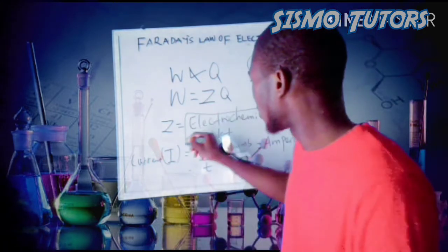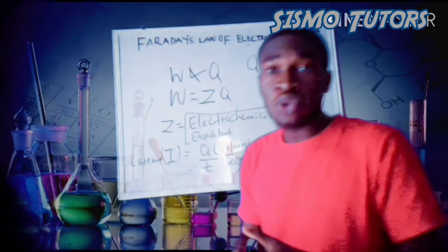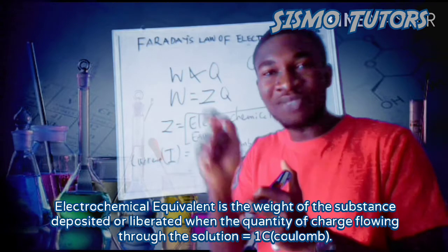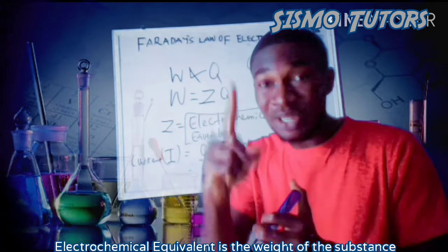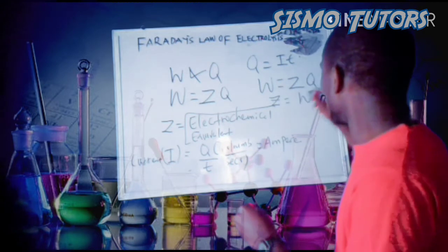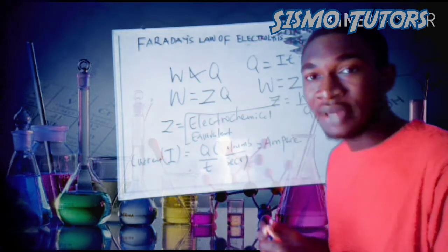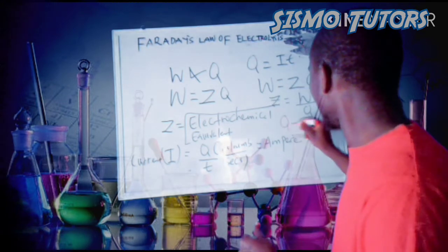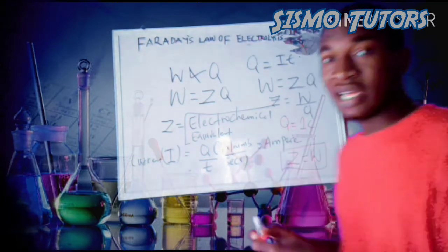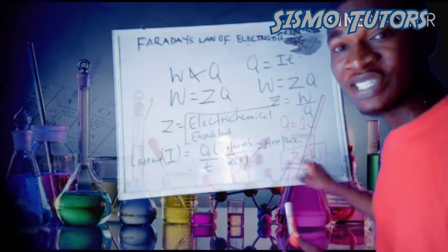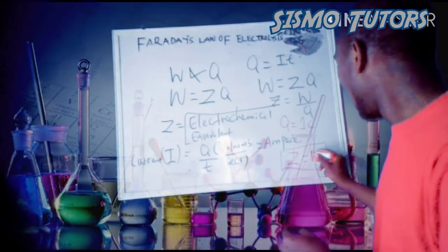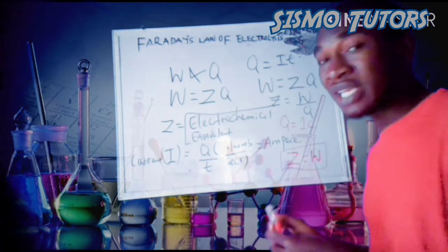Now, what is the electrochemical equivalent? The electrochemical equivalent is the weight of the substance deposited when the quantity of charge passed to the solution is equal to one coulomb. We have W = ZQ, so Z = W over Q. When Q is equal to one coulomb, we have that Z is equal to W. So that gives us the electrochemical equivalent.